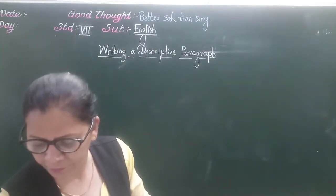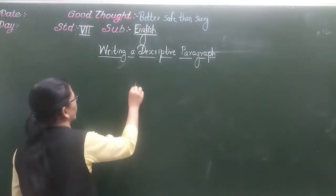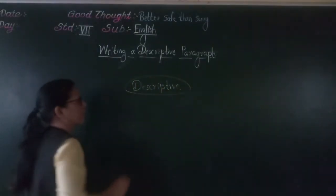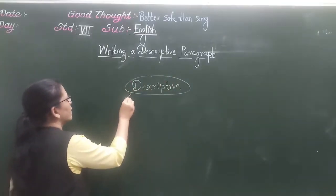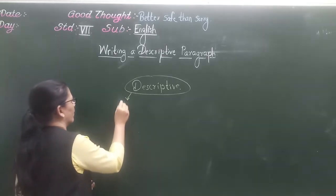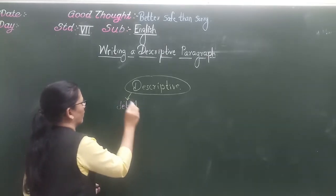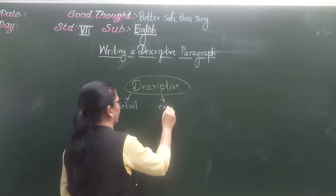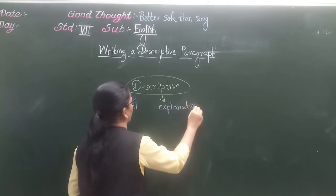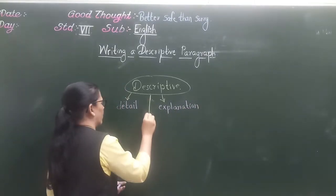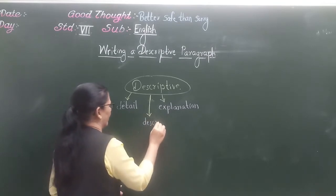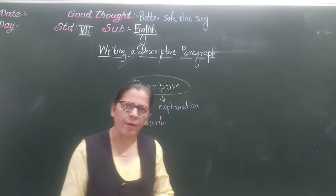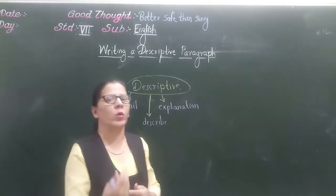What is descriptive? Descriptive means detail — to give detail about something. Or you can say explanation, or to describe. So, descriptive means to give detail of the topic, to give the explanation of the topic, or to describe the topic.